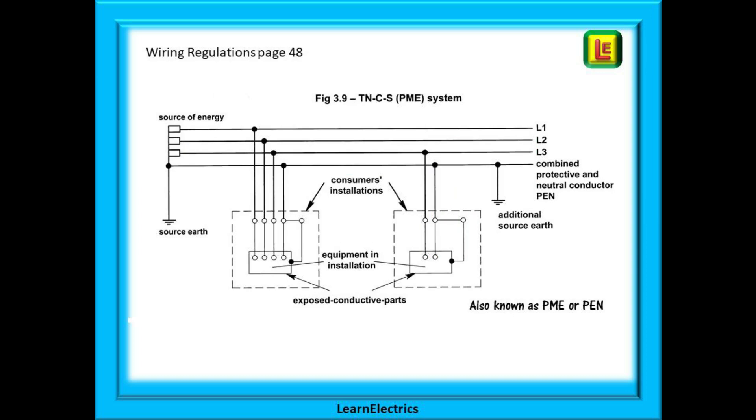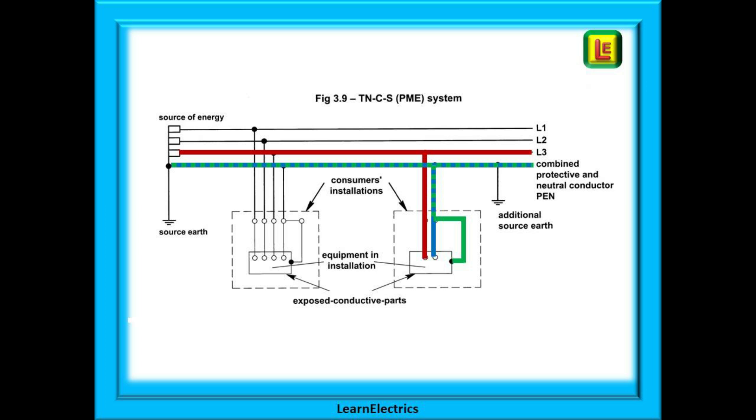Now we can look at a TNCS system. If you look at the title to this schematic you will see that the TNCS system can also be called a PME system. The phase conductor is as before. But now the earth and the neutral leave the supply transformer as one conductor. They are combined. Shown here as a dotted blue and green line. Look at the note on the right in the red box. This combined conductor can also be called a PEN conductor. And then at the intake position the earth and the neutral are separated. This is a TNCS system. Also called a PEN or a PME system.